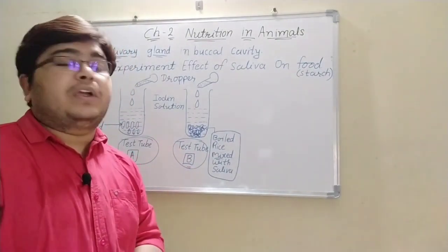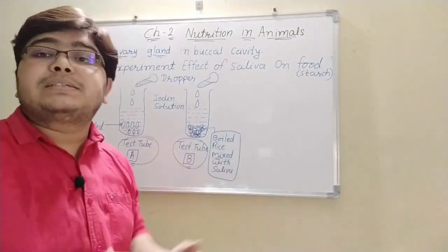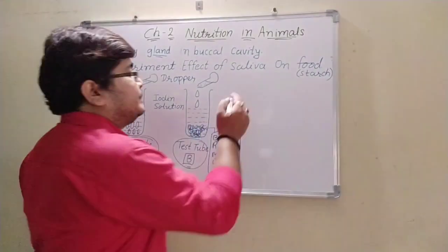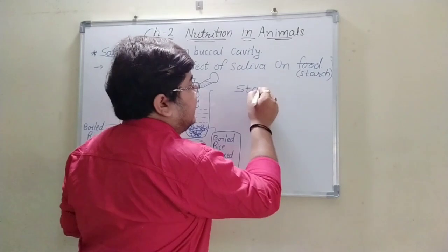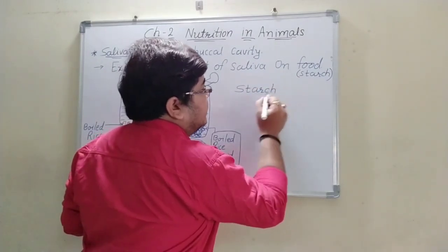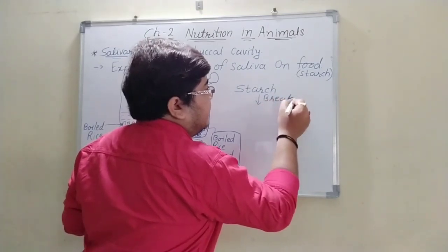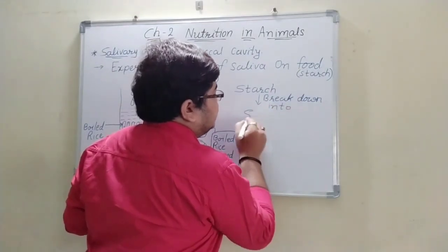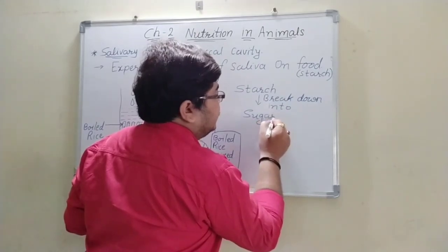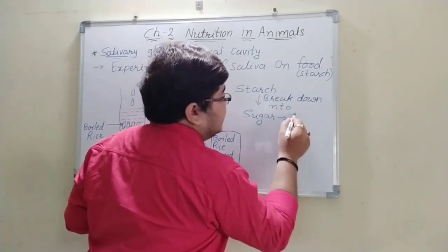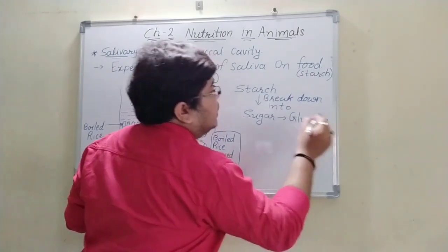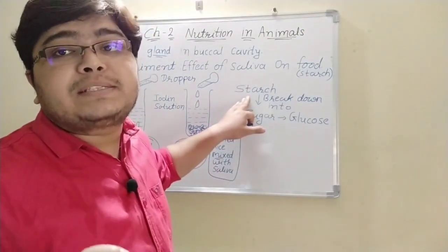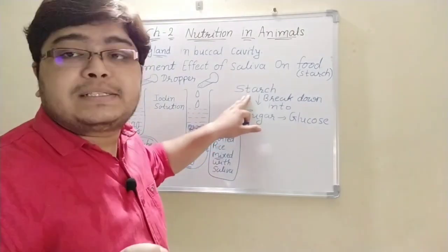The meaning of this result is that saliva consists of enzyme and water, which breaks down starch into sugar, known as glucose. Starch is a complex food substance — a complex carbohydrate — and when saliva is mixed with it, a breakdown occurs.